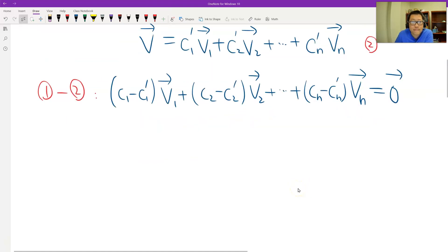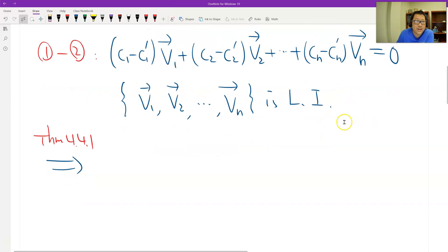So v1, v2 to vn is linearly independent because they are the basis. And remember we have a theorem. We use this 4.4.1. The linear combination equals zero for linearly independent vectors, so the coefficient should be all zero, right? Therefore we get this.